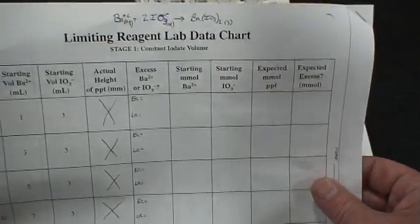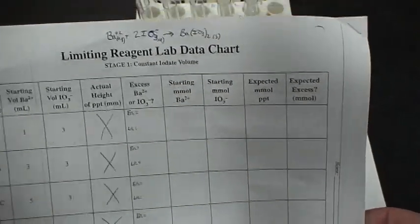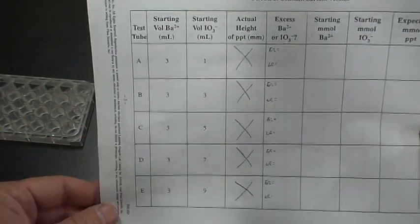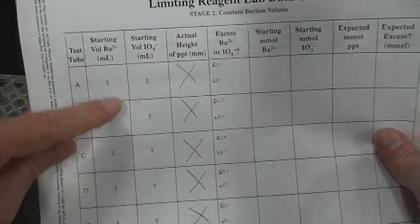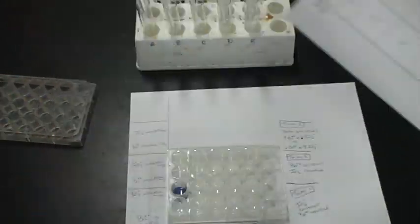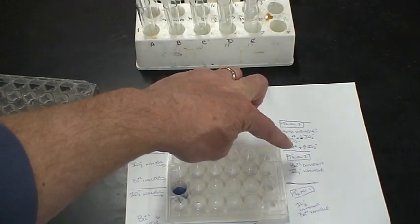Then we're going to be taking a look at the results from all three stages. We just tested stage one. I'll show you a picture in just a moment about stage two, and what we had for our experiment there was keeping our barium constant and our iodate was the variable.